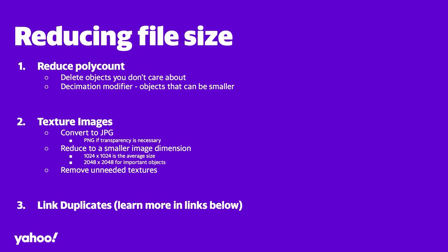When it comes to reducing file size, there are three main ways. First, reducing poly count. Second, resizing texture images or compressing them into different file formats. Third, linked duplicates — a way of making two identical objects share their file size as opposed to running them multiple times. If you have multiple identical objects, they should be linked duplicates and not just regular duplicates.